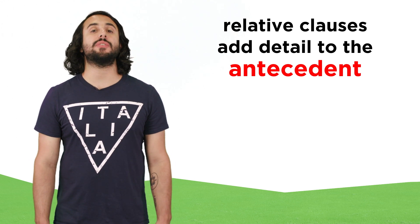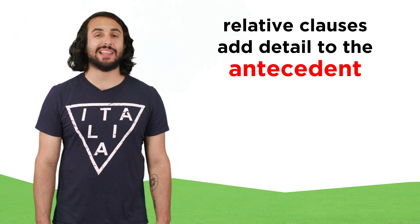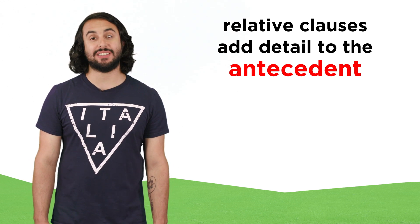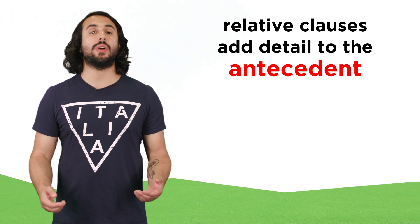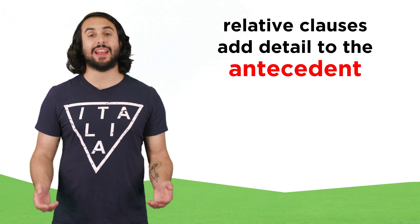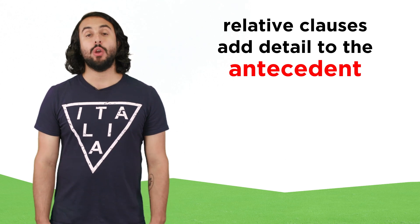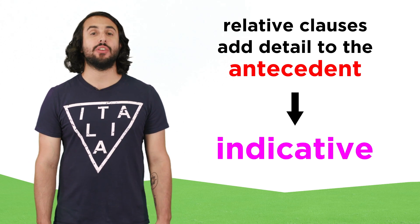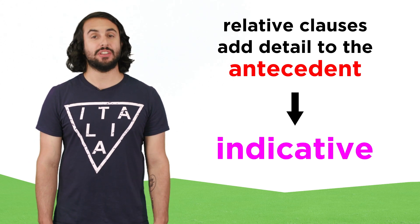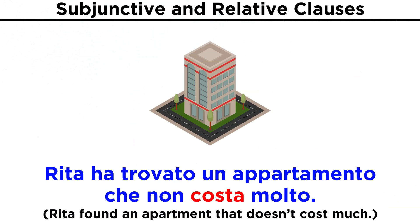As we learned earlier, relative clauses normally add realistic details to a noun called the antecedent. When this happens, the indicative is used. Rita ha trovato un appartamento che non costa molto.